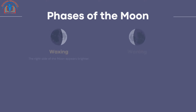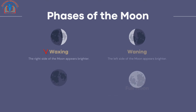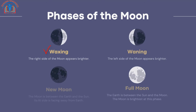Waxing: the right side of the moon appears brighter. Waning: the left side of the moon appears brighter. New moon: the moon is between the Earth and the sun, and its lit side is facing away from Earth. Full moon: the Earth is between the sun and the moon — the moon is brightest at this phase.